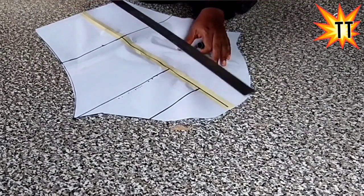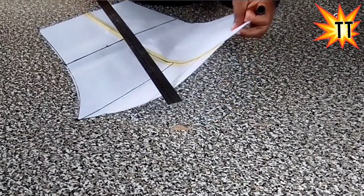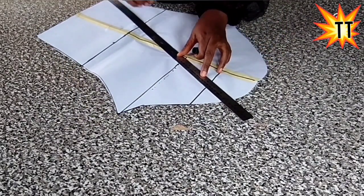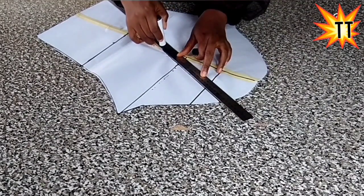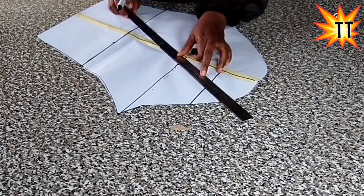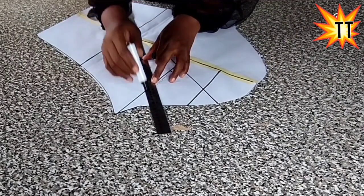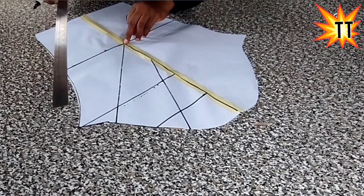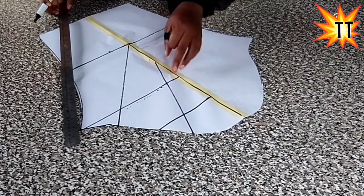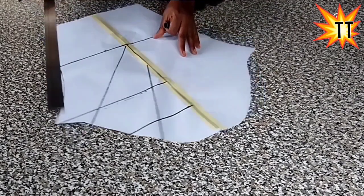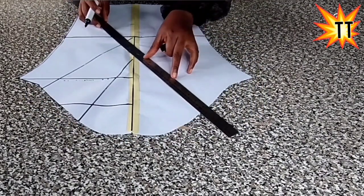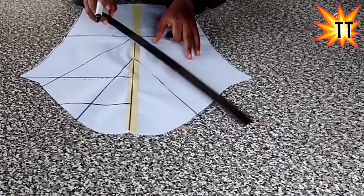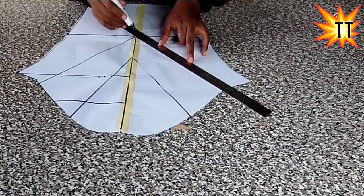Then from here I will have to divide like this. You can see I did not reach this line because I don't want my paper to cut into two, so I would like to stop it halfway.